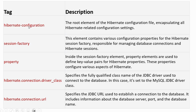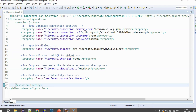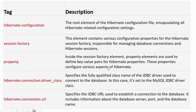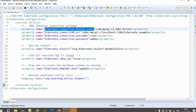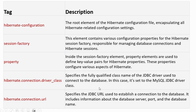Going back to the presentation, the hibernate-configuration tag is the root element of the hibernate configuration file — it encapsulates all other hibernate-related configuration settings. Inside it, the session factory element contains various configuration properties for the hibernate session factory, responsible for managing database connections and hibernate sessions. The property tags inside serve various different purposes.